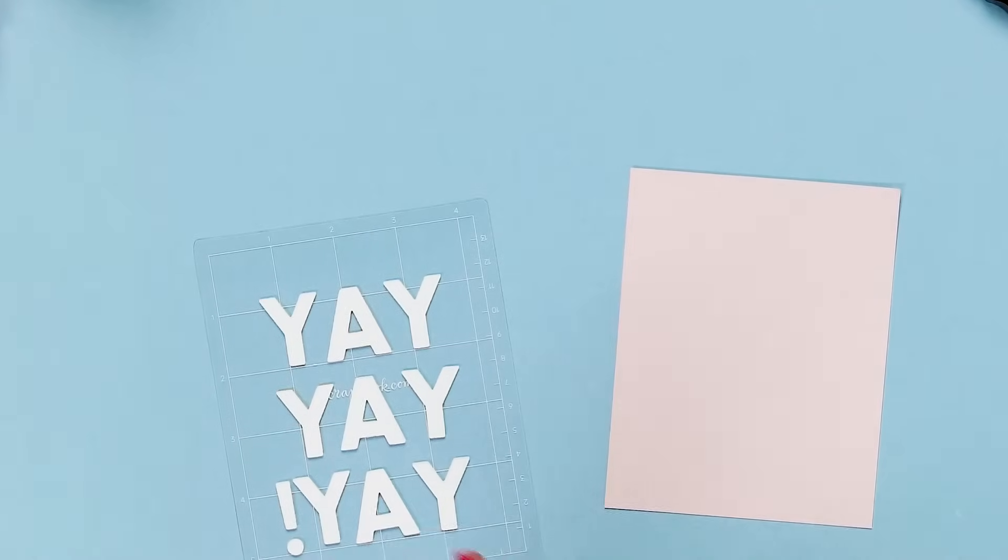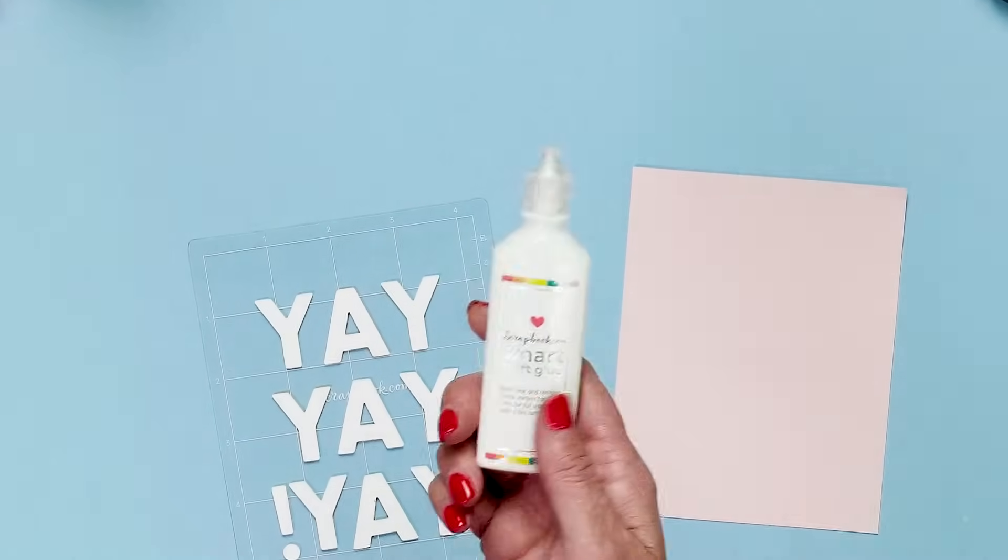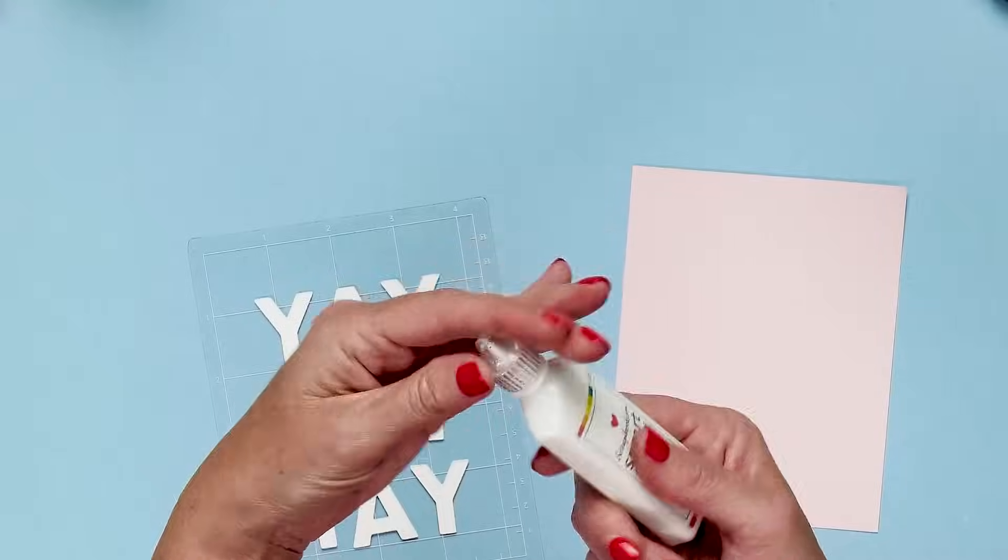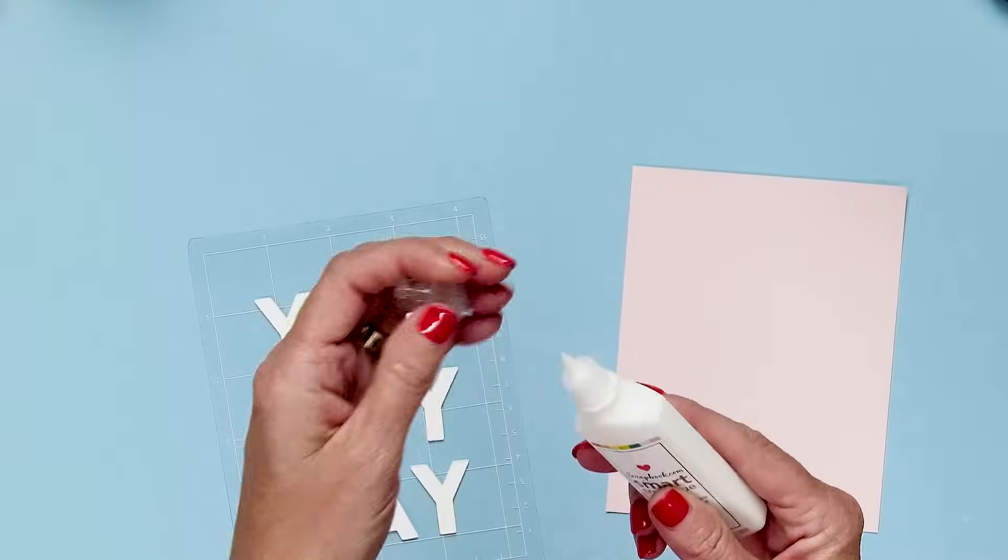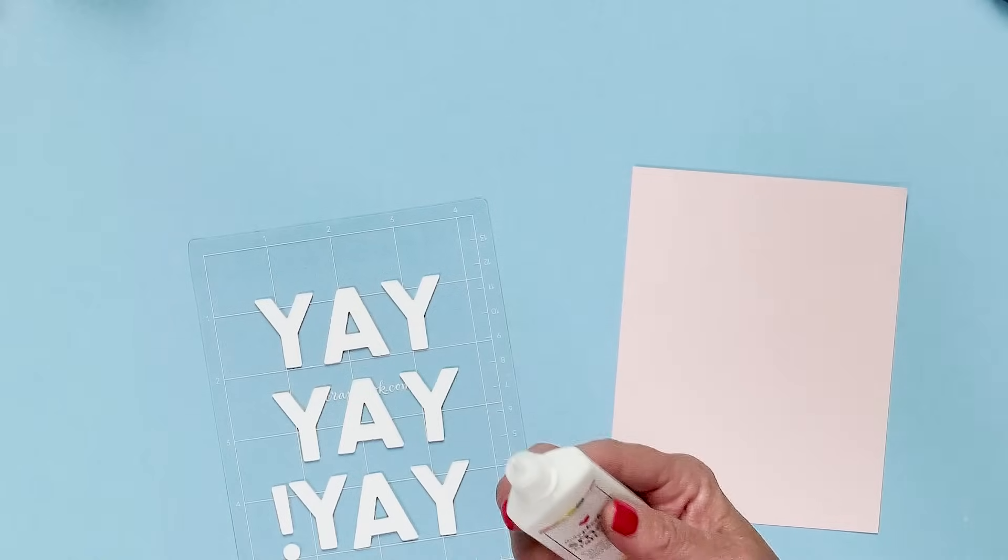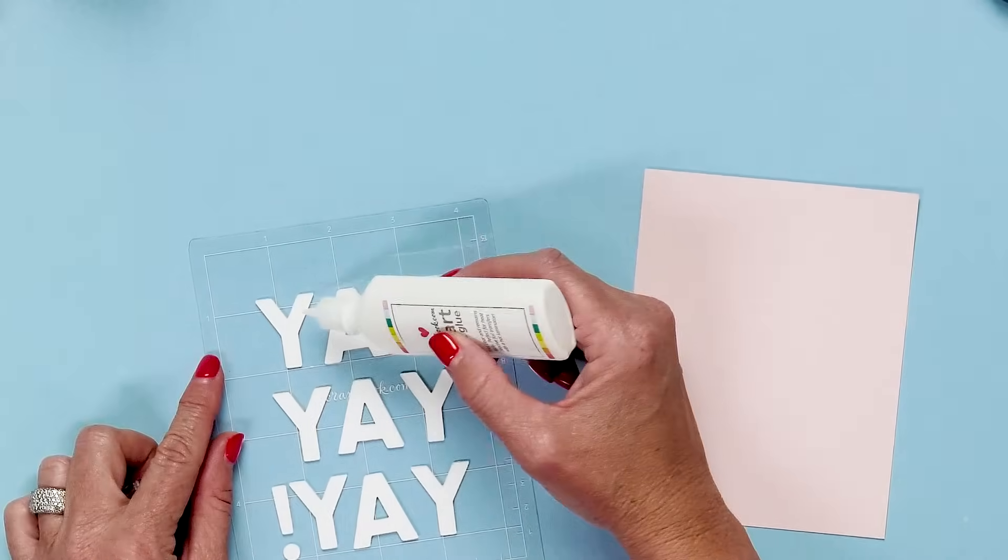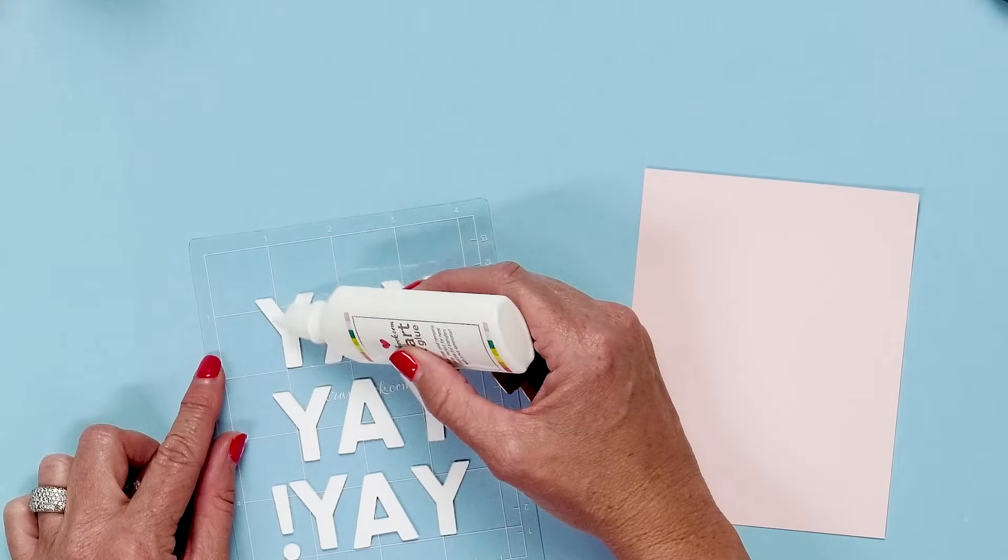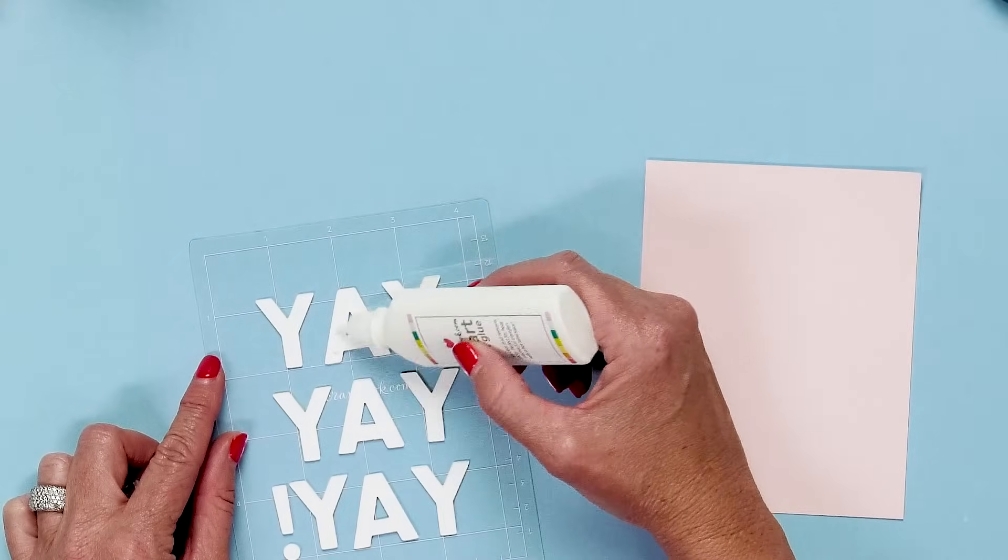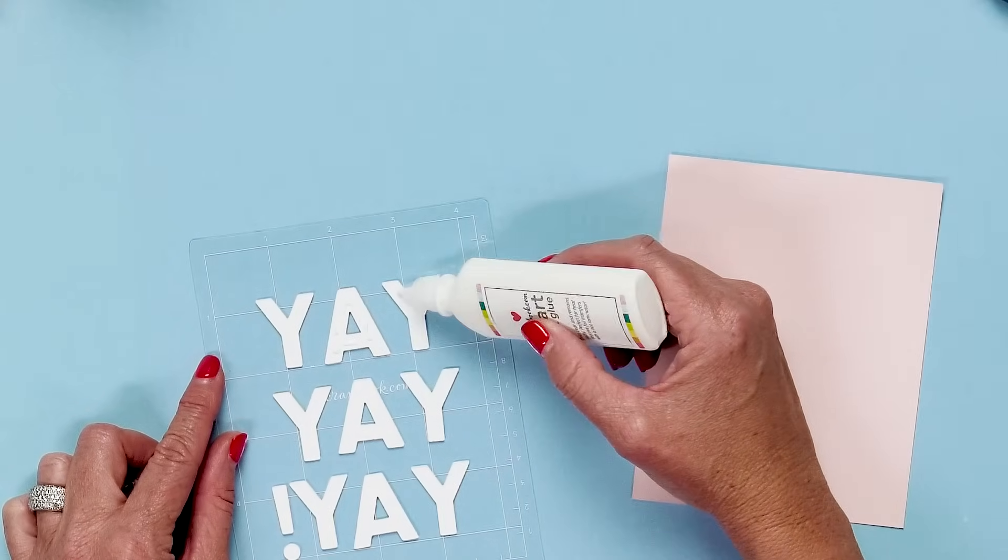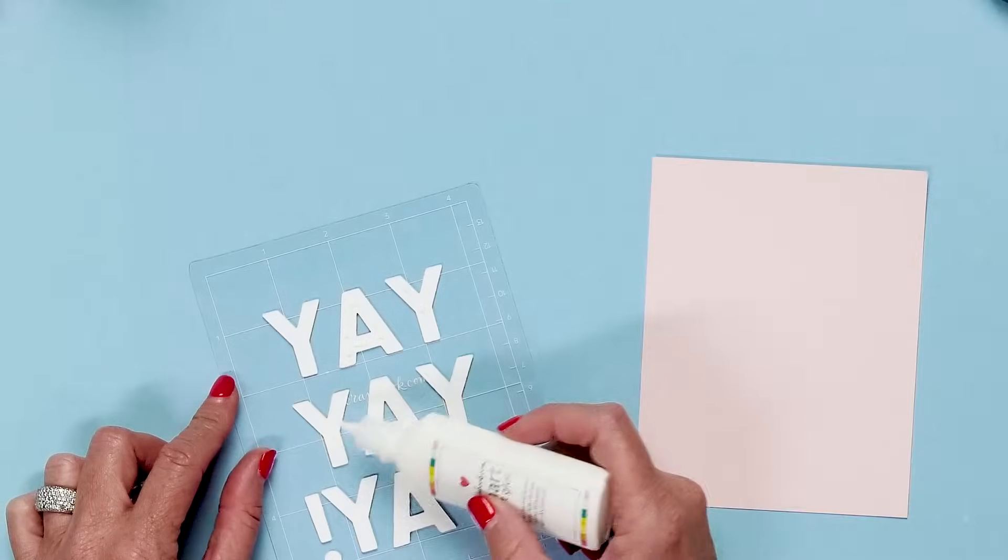How amazing is that? And then I'm going to take some of my smart glue. This is the Scrapbook.com smart glue. The great thing about this smart glue is you can use it with heat foiling, but it also gets a little tacky, which is what we want for this type of project. I'm going to put a little bit of glue on here and then wait just a second for it to get a little tacky so that it goes down onto my paper where I want it.